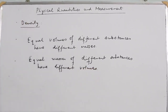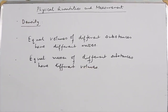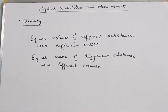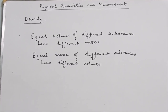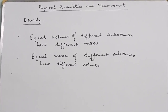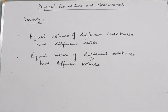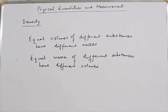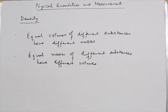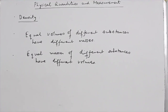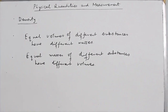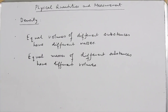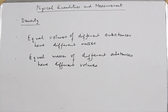If you consider 1 kg of iron and 1 kg of wood, both masses are 1 kg. But from our observation, the volume of 1 kg of cotton will be quite large compared to the volume of 1 kg of iron. On the basis of this realization, whether the volumes are equal or the masses are equal, we can compare the density of different substances.